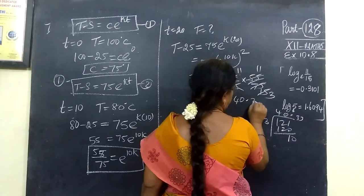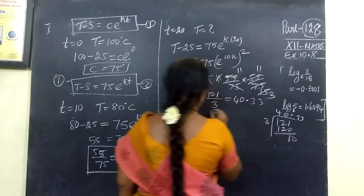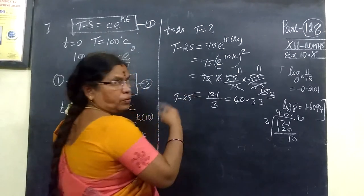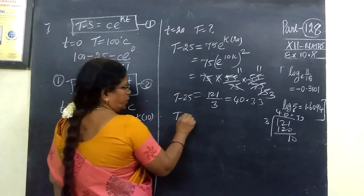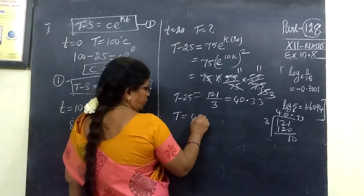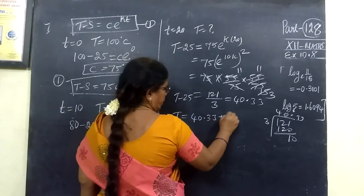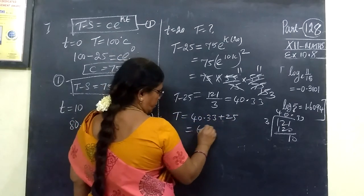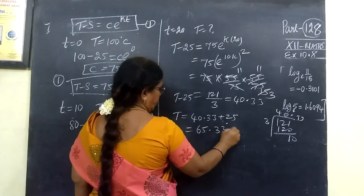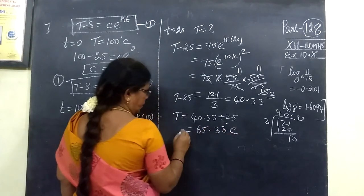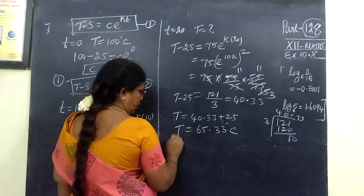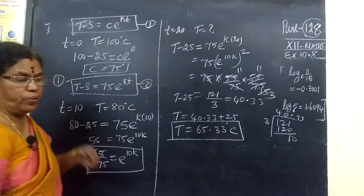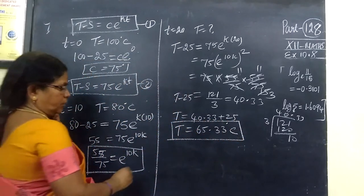We get 40.33. So, which implies, adding S equals 25 to the other side, T equals 40.33 plus 25, which gives T equals 65.33 degrees Celsius. This is the answer to part one — the temperature after 20 minutes. Part one is over.